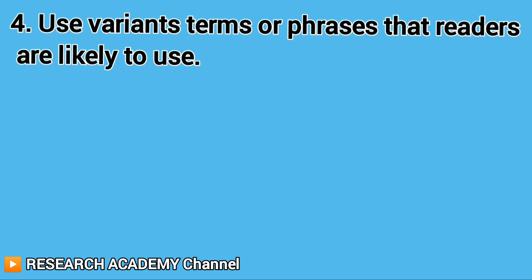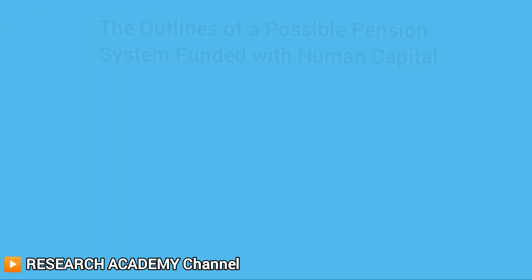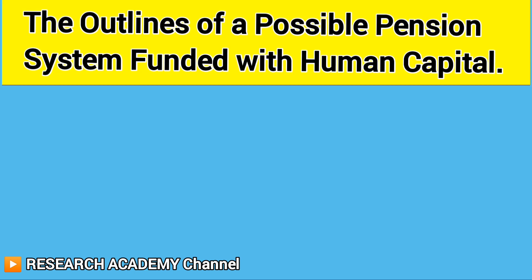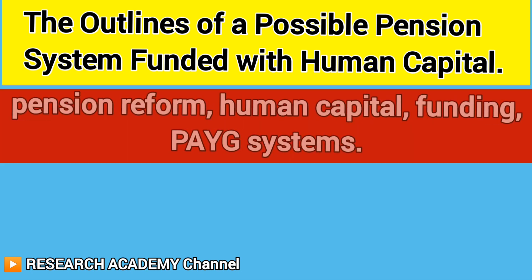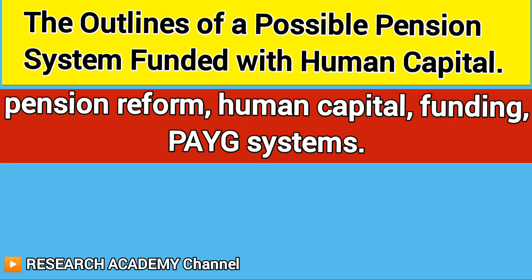Tip 4: Use variance terms or phrases that readers are likely to use. For example, if the paper title is 'The Outlines of a Possible Pension System Funded with Human Capital,' use keywords like: Pension Reform, Human Capital, Funding, PAYG Systems, etc.